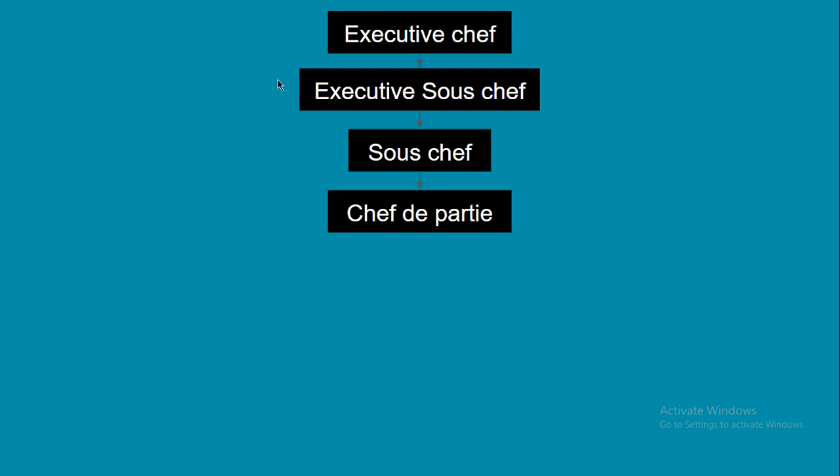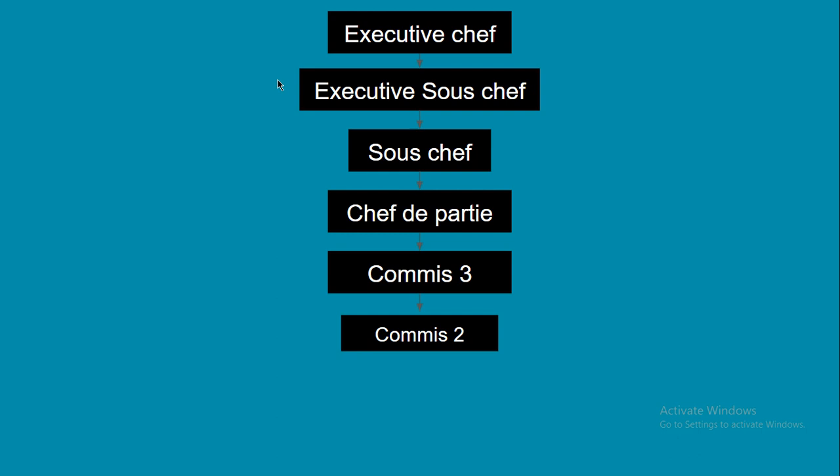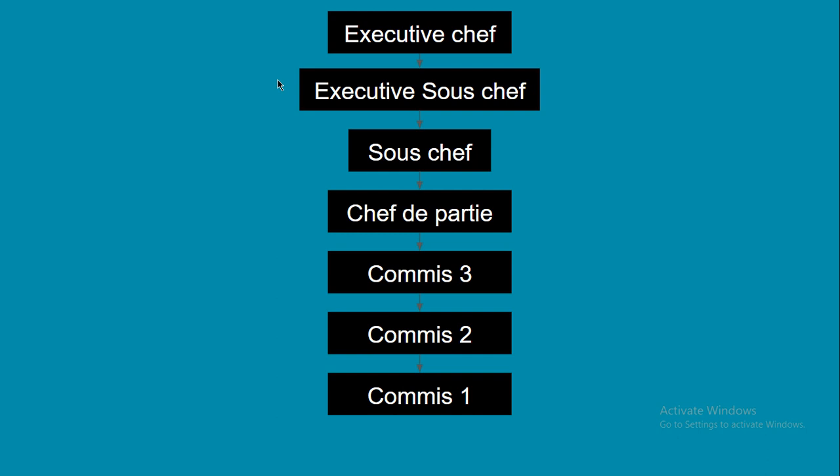Next are the Commis — Commis 3, Commis 2, and Commis 1. All these Commis have mostly the same duties. In many establishments there is a single post for Commis rather than three separate levels. They majorly prepare all dishes according to orders and to the proper standards. They also do the mise en place, that is pre-preparation — all the pre-preparation of dishes done before service.